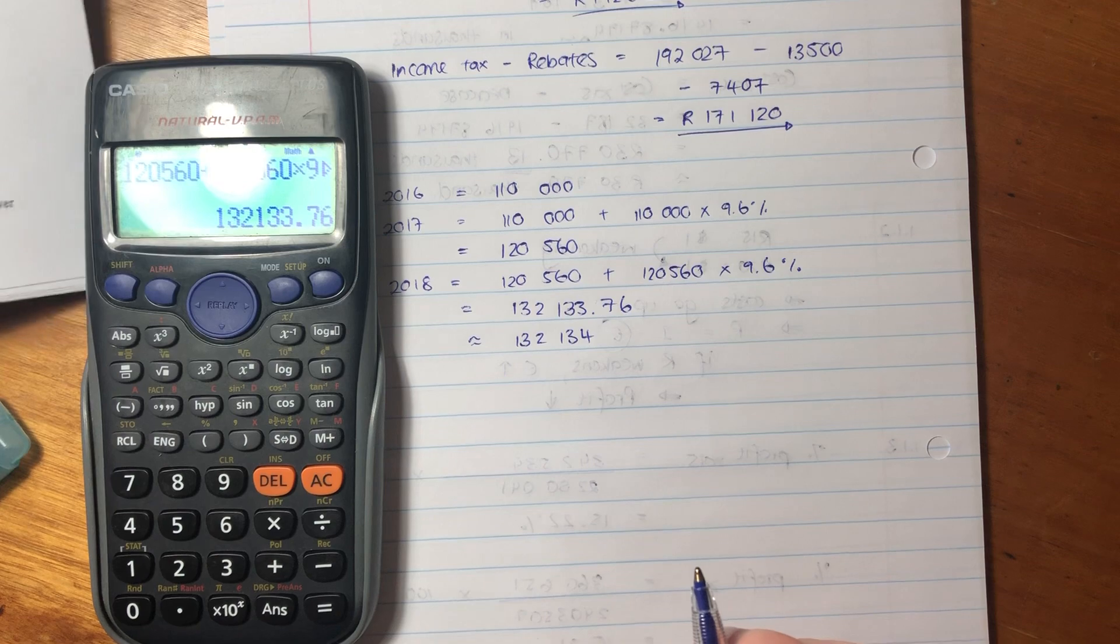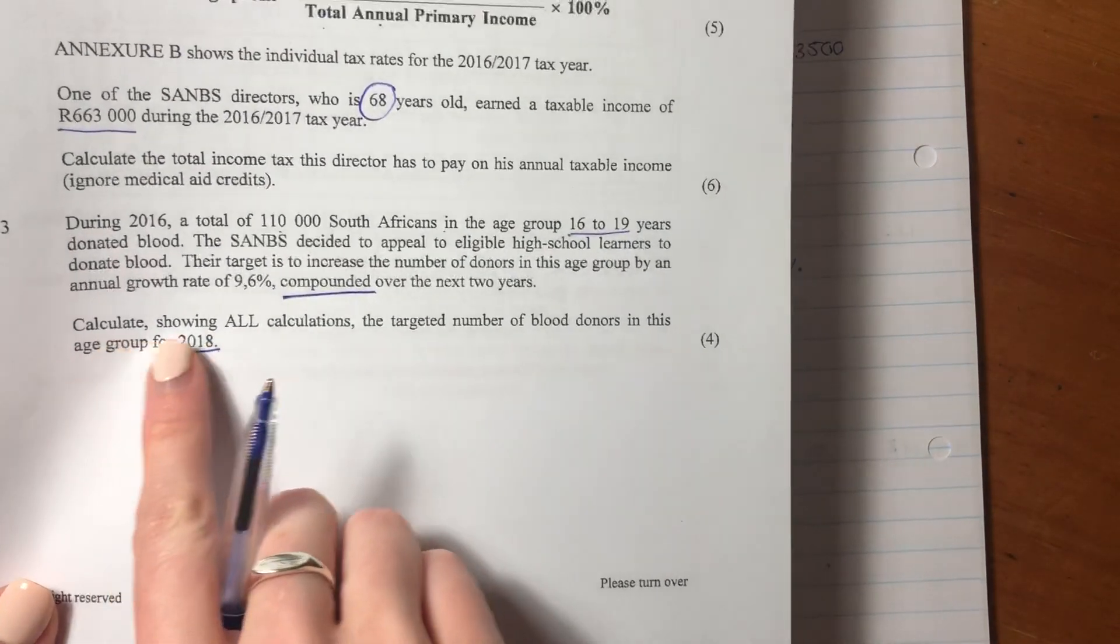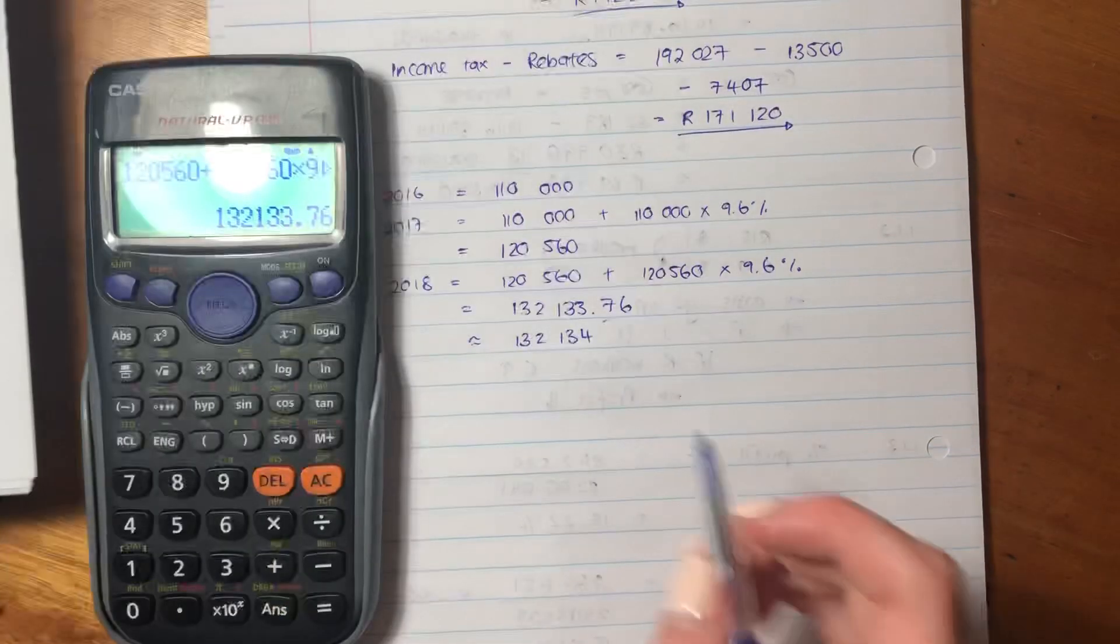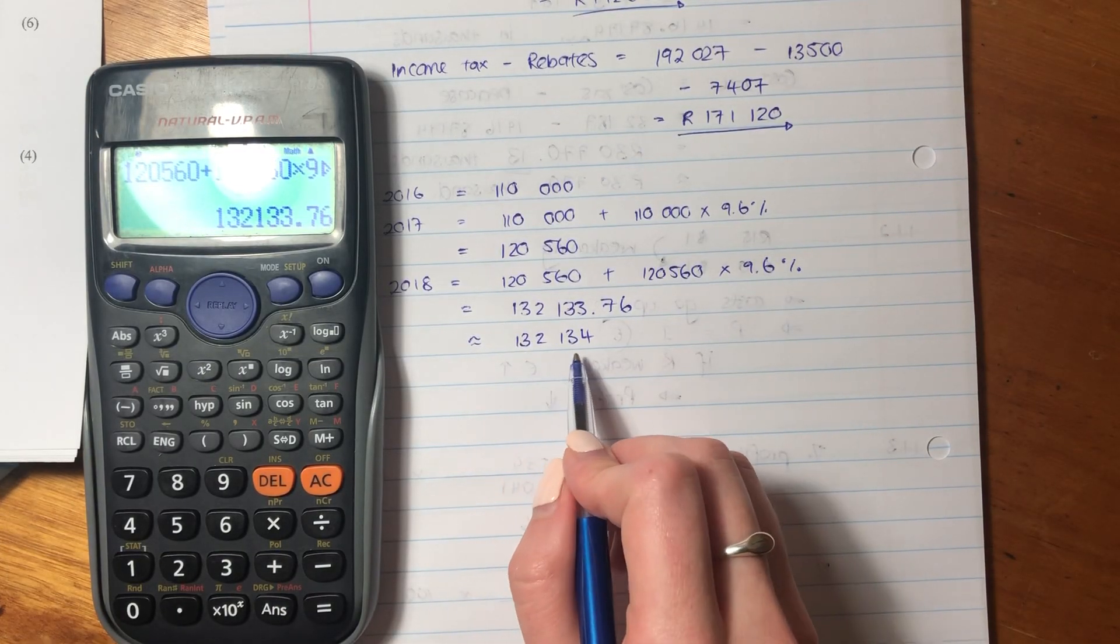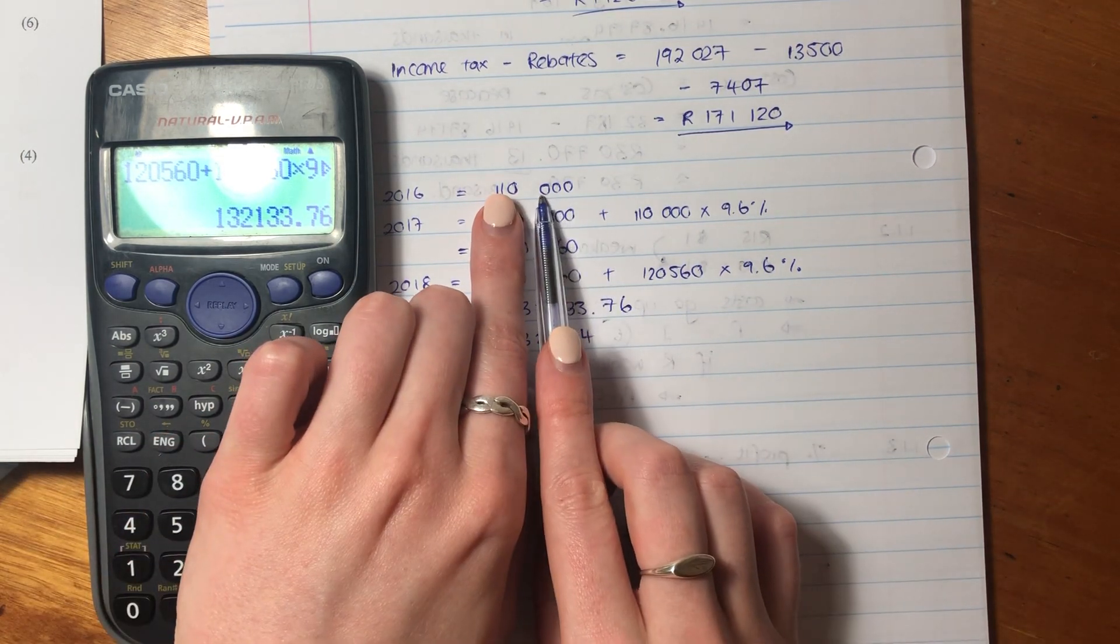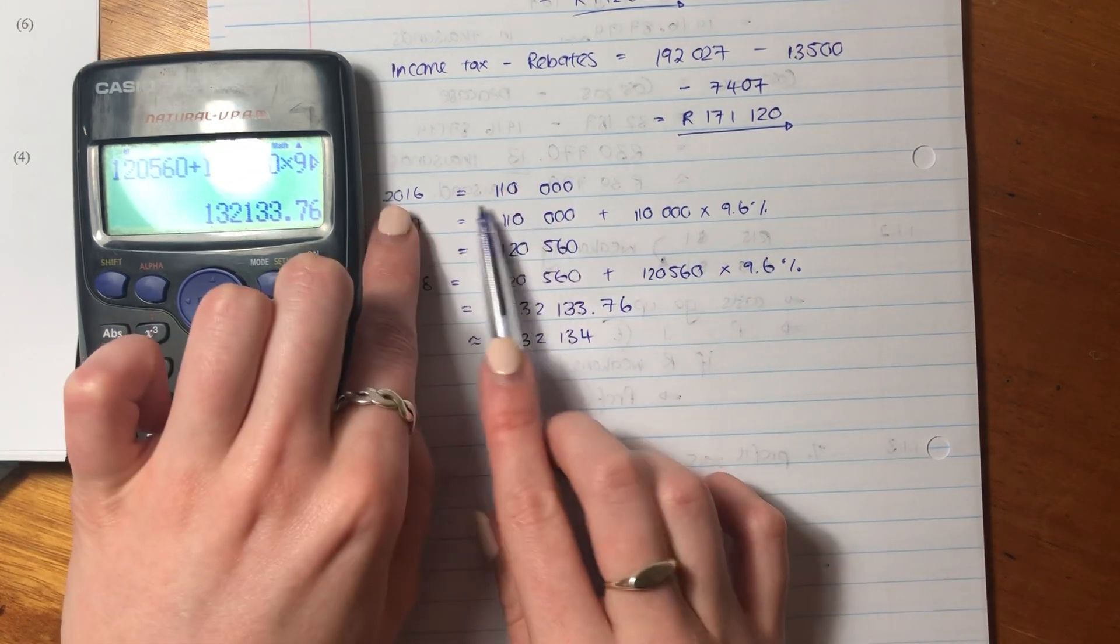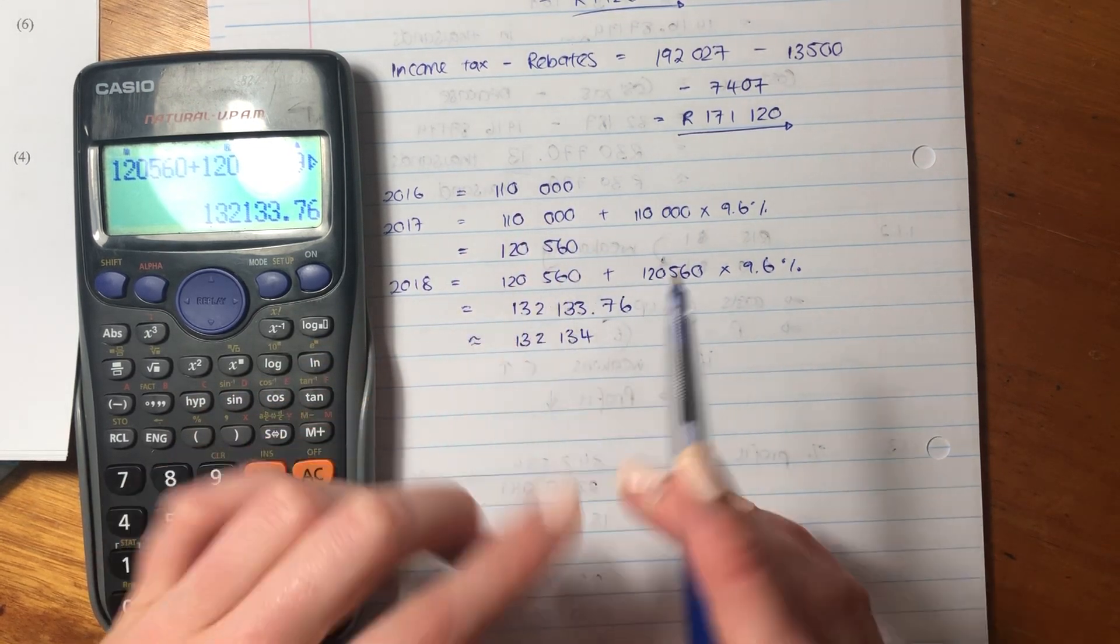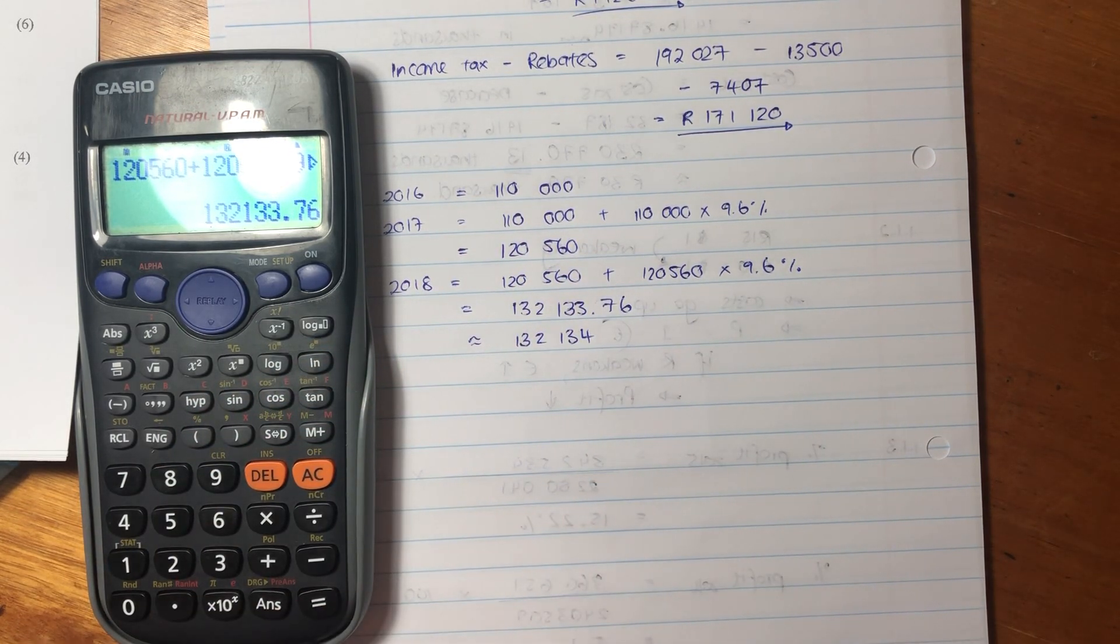So they asked us, calculate showing all calculations, the target number of blood donors in the age group for 2018. So the target number is 132,134. The important thing here is to realize that you have to use the previous year. So you use 2016 to get 2017. Use 2017 to get 2018. So you kind of have to work very methodically to get this answer.